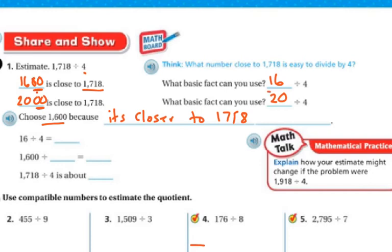16, which is a basic fact divided by 4 and 16 divided by 4 is 4, but it's really 4 hundreds, because we are using basic facts here. So 1600 divided by 4 is 400.